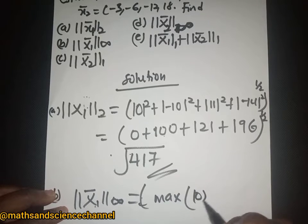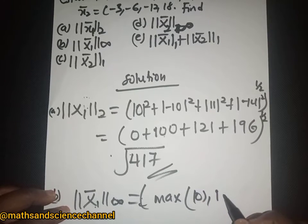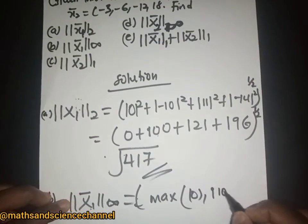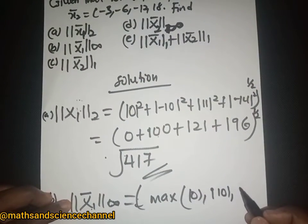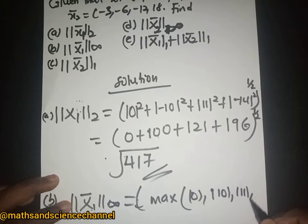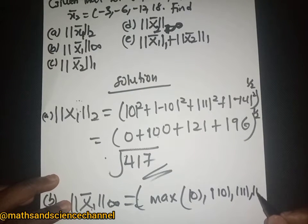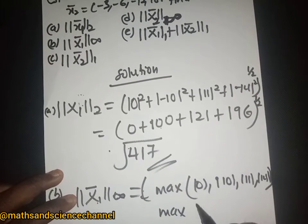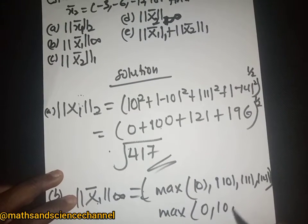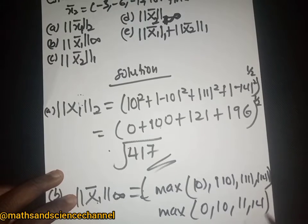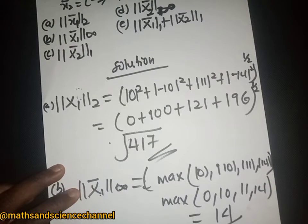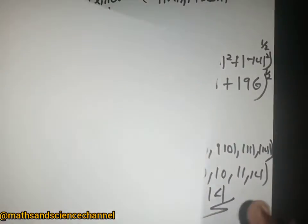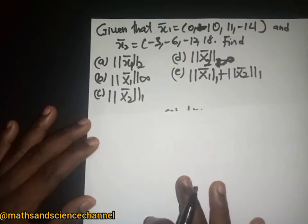We take the absolute values: the absolute of 0 is 0, the absolute of -10 is 10, the absolute of 11 is 11, and the absolute of -14 is 14. The maximum of {0, 10, 11, 14} is 14, so the infinity norm of x1 is 14.